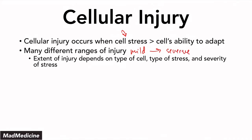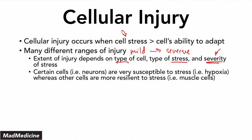The extent of the injury is going to depend on the type of the cell, the type of the stress, as well as the severity of the stress. You do have certain cells in your body, like your neurons, that are very susceptible to stress and not able to adapt easily, whereas other cells, like your muscle cells, are able to adapt to stress very well and are very resilient. There are many causes of cellular injury, but today we're going to focus on the first one, which is hypoxia.